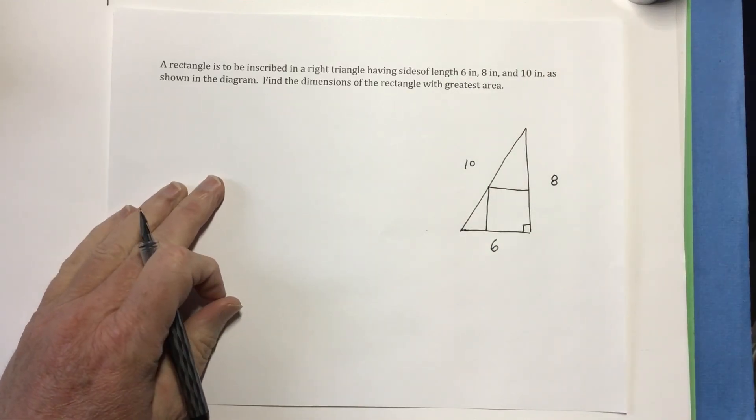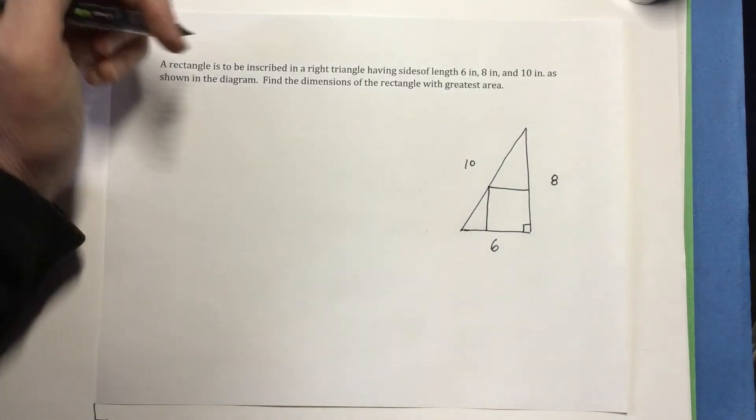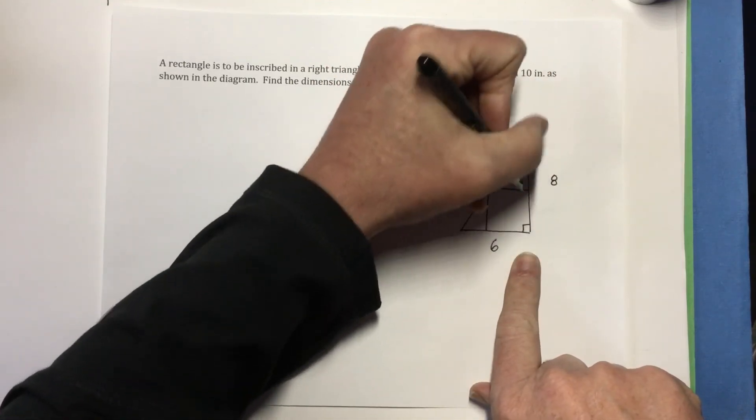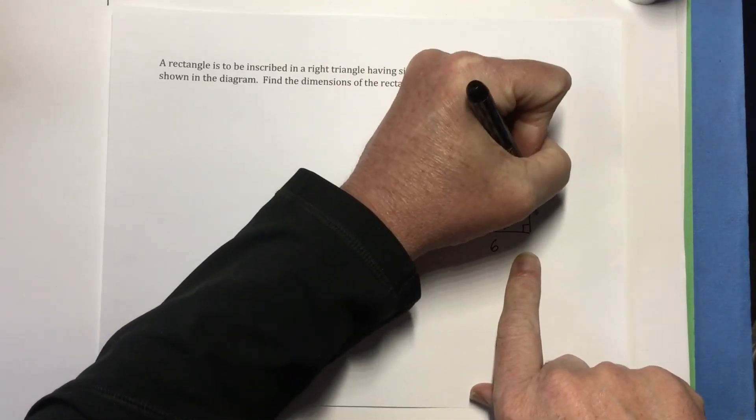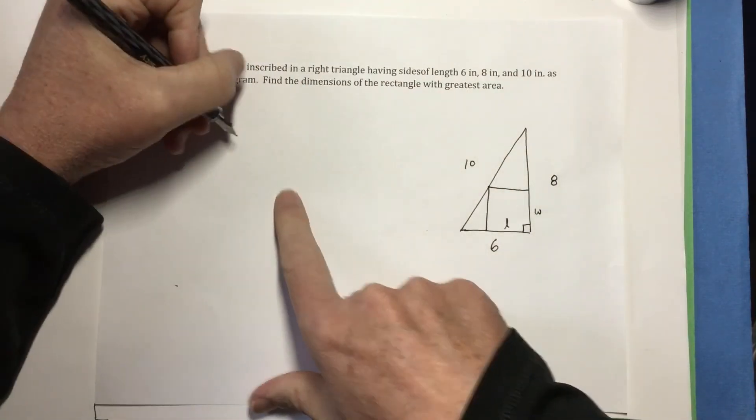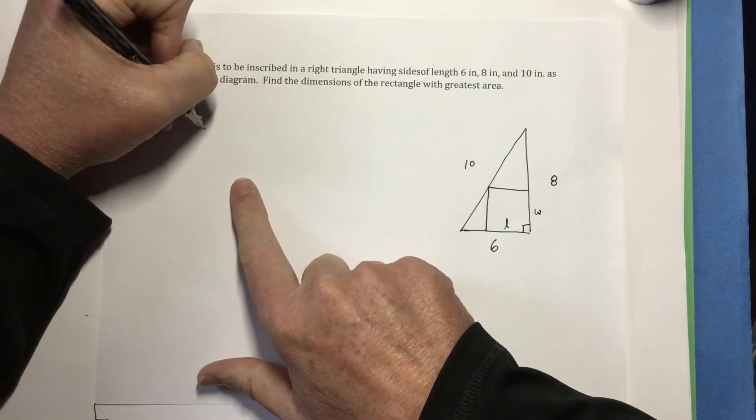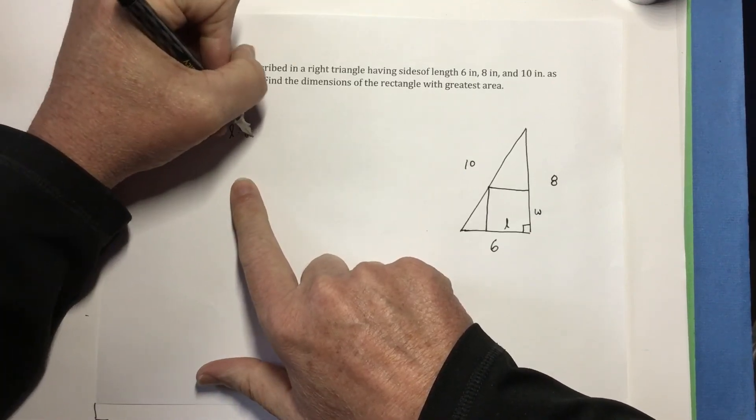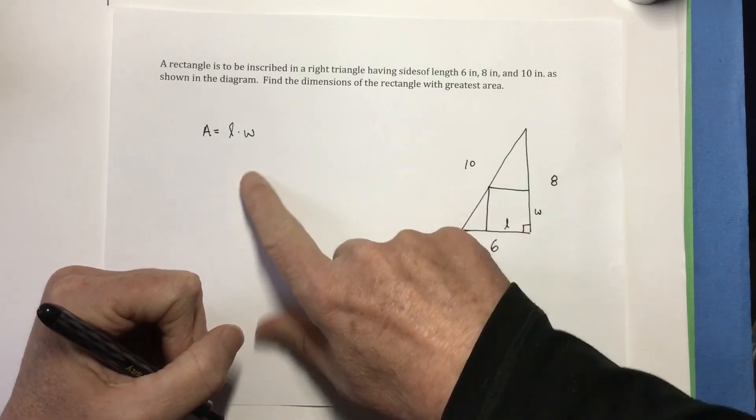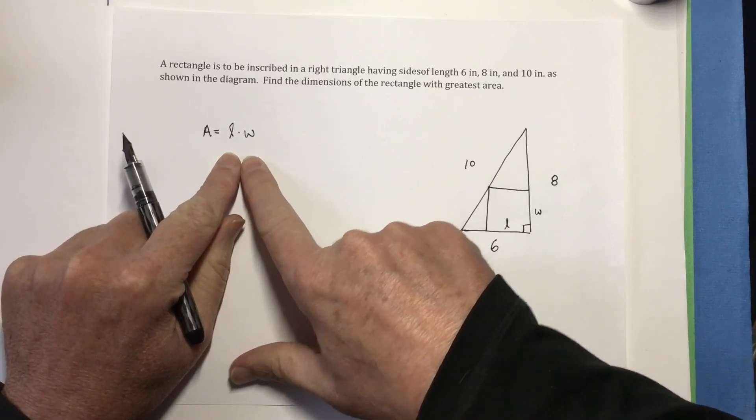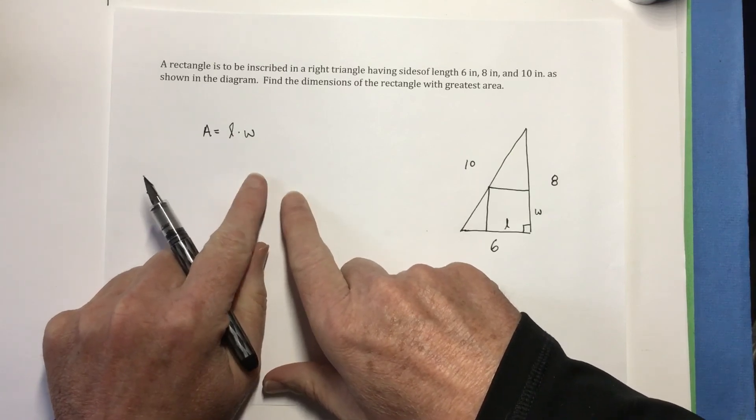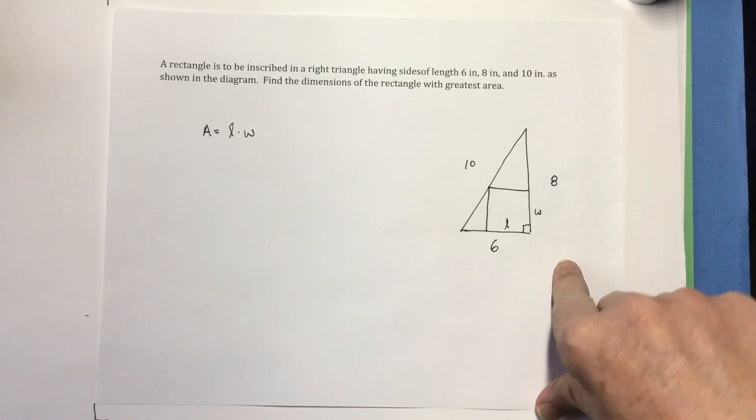So this is a max min application problem. So I'm just going to go ahead and label this the length and that the width. So there's that rectangle right there is what I'm trying to maximize. So the area will equal the length times the width. Now the problem is when you're working these problems, is I have to get them down to one variable. So I need to either relate L in terms of W or W in terms of L.